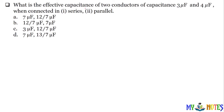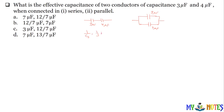Next: what is the effective capacitance of two conductors of capacitance 3 microfarad and 4 microfarad when connected in series and parallel? Series mein: one upon three plus one upon four. Aur parallel mein jab nikalenge toh simple add karna hai: three plus four — so yeh hoga seven microfarad.